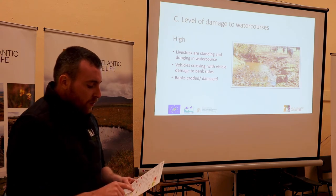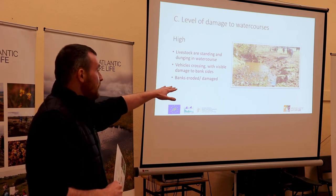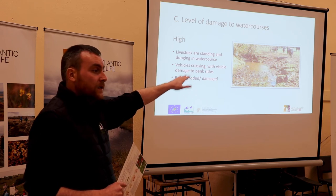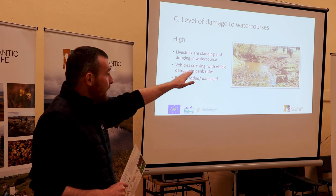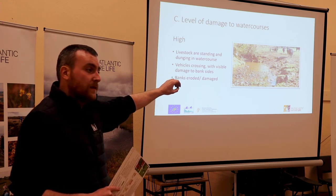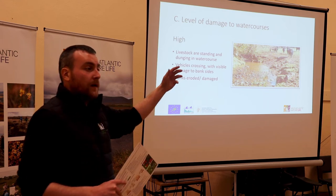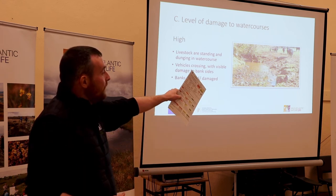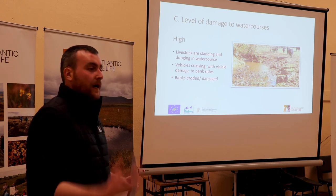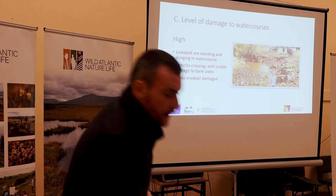Section C asks: what is the level of damage to watercourses as a result of livestock or vehicular access? A high level of damage is where cattle have free access into a river with no buffers - the cattle are collapsing the bank, dunging in the river, introducing sediments and nutrients. Likewise, if a tractor or quad is crossing through repeatedly, churning up sediment and damaging the bank, that's also a high level of damage, scoring 0.3.